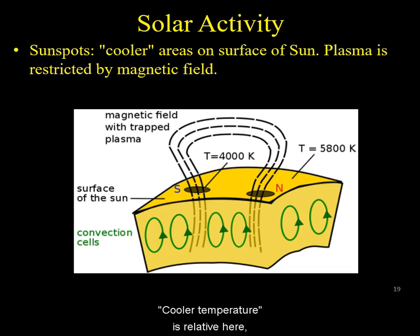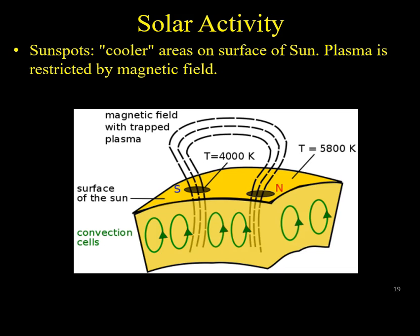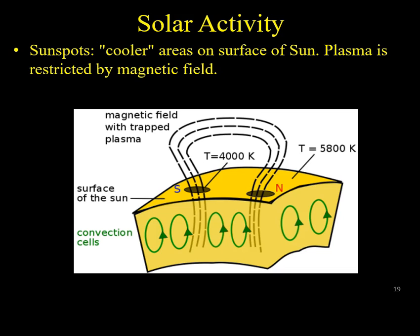Cooler temperature is relative here, as a sunspot is still several thousand Kelvins hot. Sunspots are caused by increased solar activity that generates magnetic field lines that penetrate through the surface.